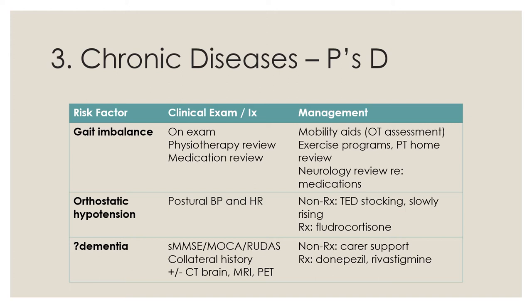Secondly, Parkinson's patients will experience orthostatic hypotension due to depletion of dopamine in the autonomic nervous system. You can detect this with postural blood pressure and heart rate — they will likely have a greater than 20 mmHg drop in systolic pressure after standing for one minute. Management can be divided into non-pharmacological — TED stockings and advising them to rise slowly or take a gulp of water when rising — and pharmacological, including fludrocortisone or midodrine, which have shown some slight evidence.